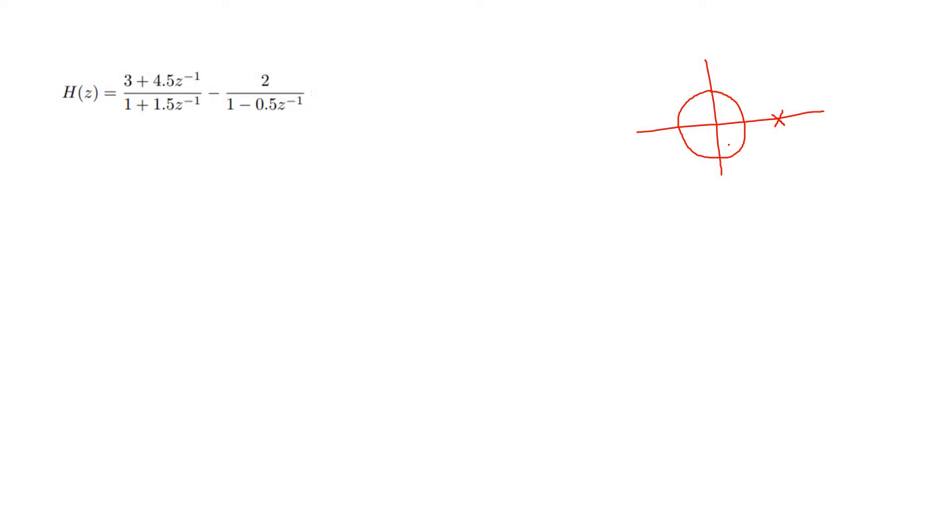So I have to make this particular system a stable system. Suppose this is A. So what is the transfer function? 1 by Z minus A, and A is something which is greater than 1. From this particular pole, that is Z-plane representation, we can say the transfer function looks like this.